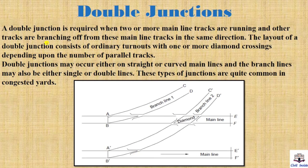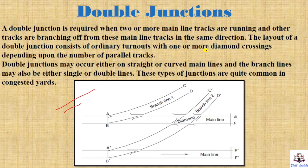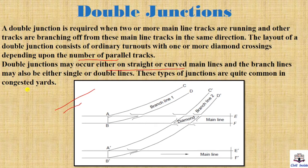The last layout is the double junction. It is required when two or more main line tracks are running and other tracks are branching off from these main line tracks in the same direction. The layout of a double junction consists of ordinary turnouts with one or more diamond crossings, depending on the number of parallel tracks. Double junctions can occur on straight or curved main lines, with branch lines being either single or double. These junctions are quite common in congested yards.